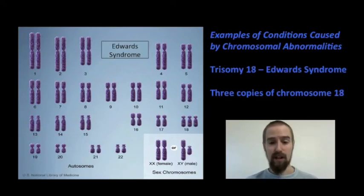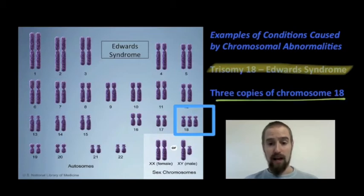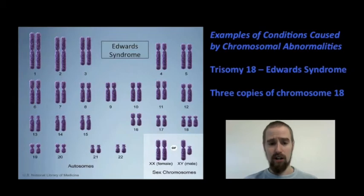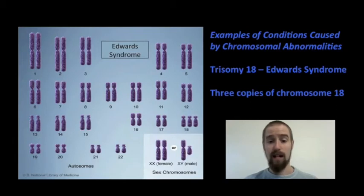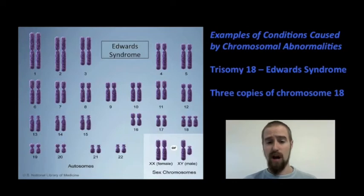Edwards Syndrome is another example of a condition caused by a chromosomal abnormality — in this case, an extra copy of chromosome 18. Most individuals with Edwards Syndrome die before birth, and this condition has a very low survival rate overall due to the presence of serious heart defects. Other symptoms include smaller than average head size, webbing in some of the toes, and a cleft lip or palate. Individuals with Edwards Syndrome also experience severely delayed mental and physical development, and usually die sometime in the first year of life, but may live as long as 10 years in some cases where symptoms are not as severe.